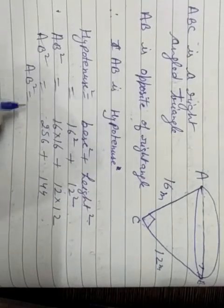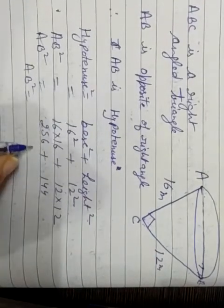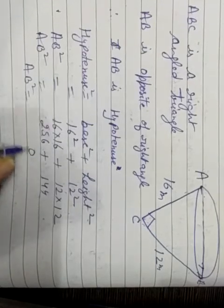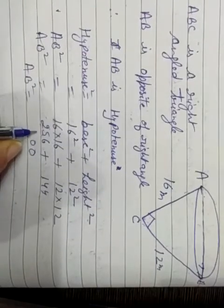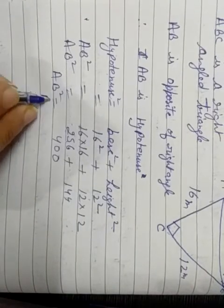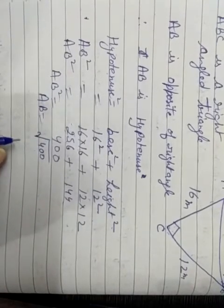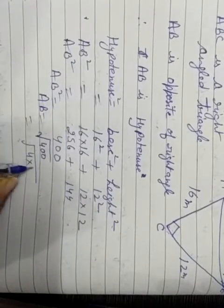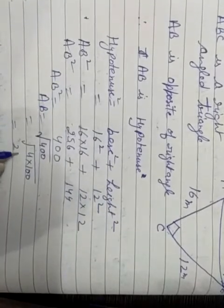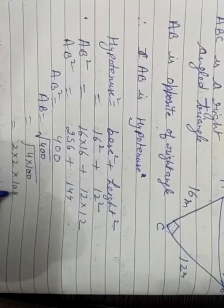AB square - now find the value of AB square. 256 plus 144 is equal to... 6 plus 4 is 10, 5 plus 4 is 9, carry 1, 2 plus 3 is 6... 400. AB square is equal to 400.